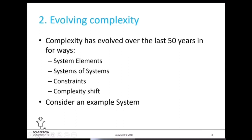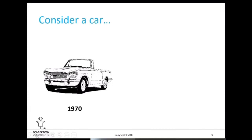People often say the world has become more complex over time — yes, of course it has. But what exactly do we mean by that? This is the idea of evolving complexity: over the last few decades, certainly the last 50 years, we can see complexity has changed. In some cases it's just increased, but we also see that the nature of our systems has changed, and that's led to a change in the complexity.